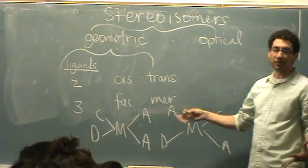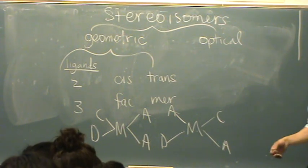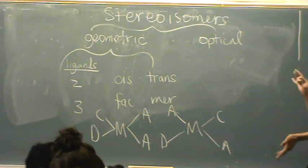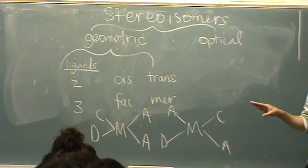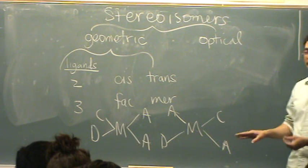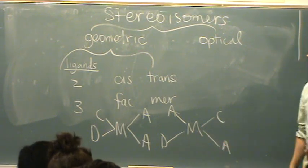These two, even though I just made them up, would have different physical properties, even though they're pretty much the same. Each metal has two A's, a C and a D, but they're arranged differently in space. Okay, that's the geometric. So different physical properties arranged differently in space, but still bonded to the same stuff. Two A's and a C and a D.